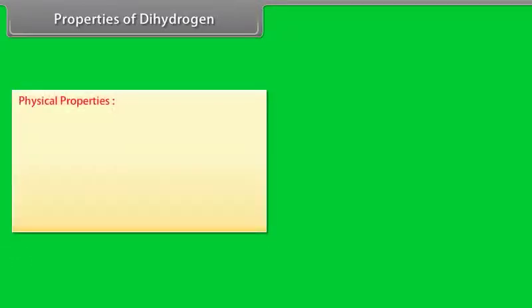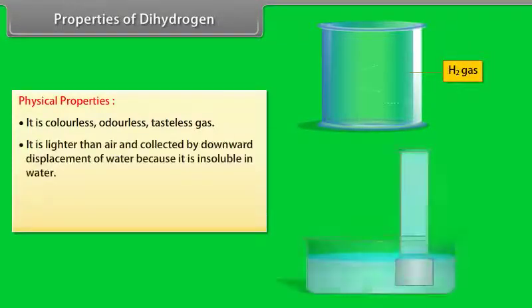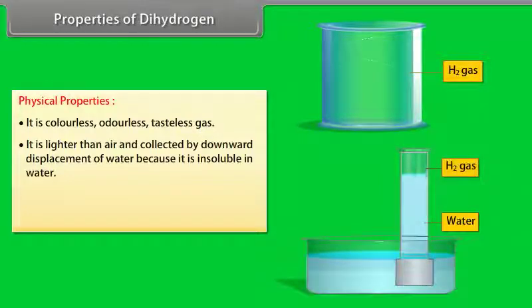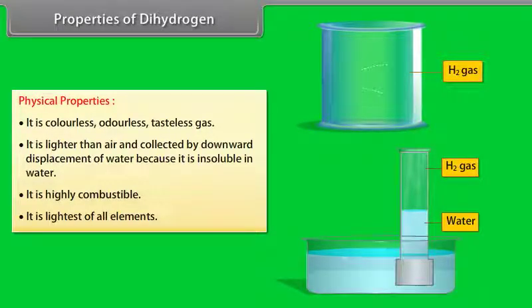Properties of dihydrogen. Physical properties. It is colorless, odorless, tasteless gas. It is lighter than air and collected by downward displacement of water because it is insoluble in water. It is highly combustible. It is the lightest of all elements.